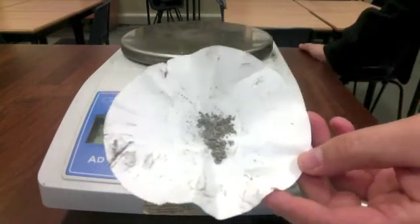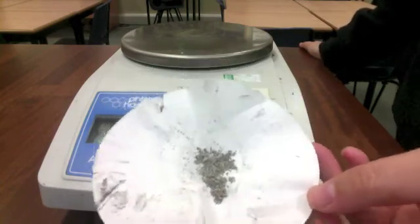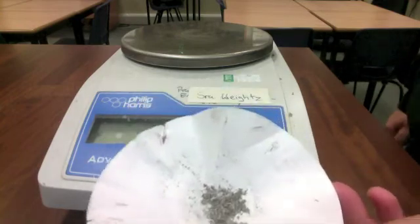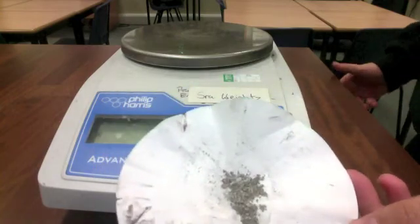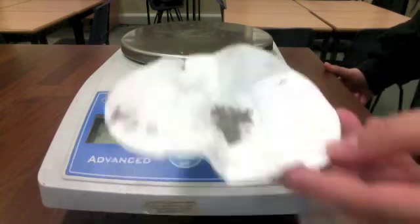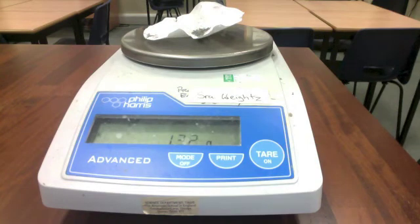All right, here we have the precipitate that did not go through the filter paper. Before I started the filtration, I took the mass of the filter paper on its own, and it was 1.09 grams. Now that I've allowed my precipitate and the filter paper to dry, I'm going to take the mass again, and it comes out to 1.32 grams. Knowing this mass, it will allow me to use stoichiometry and go back and determine what was the original concentration of that unknown silver nitrate solution.